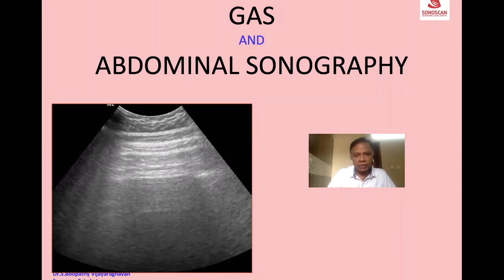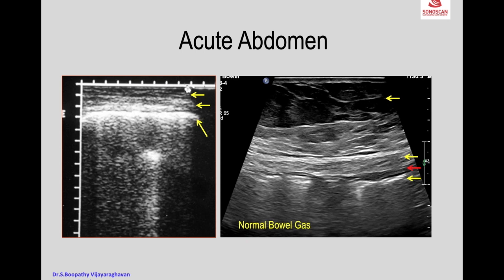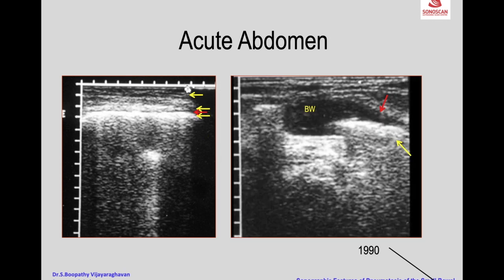This is a preview showing all the layers — subcutaneous fat, the muscle — and you see the long echogenic line of gas, as opposed to the broken gas pattern we see normally. This is a very long line. This case kindled my interest in the gas patterns in the abdomen, and that is the outcome of this lecture. We will see the various situations where gas is useful.